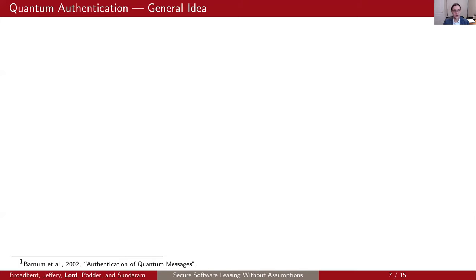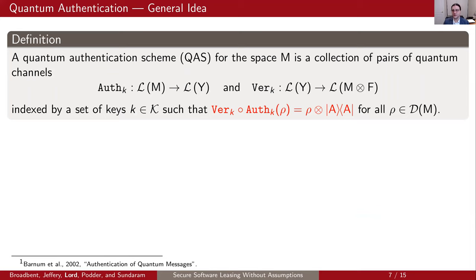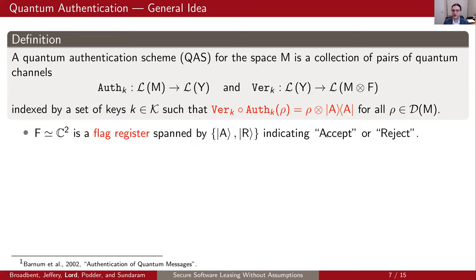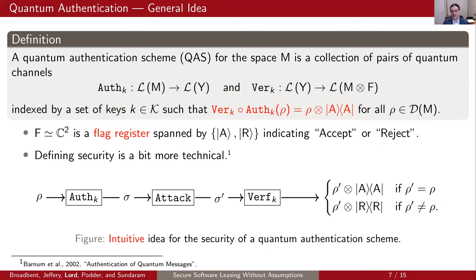We achieve honest malicious copy protection using quantum authentication. At the level of syntax, a quantum authentication scheme for some space M is a collection of pairs of quantum channels, authenticate and verify, indexed by keys k. They satisfy a correctness guarantee: if you verify an authenticated state using the correct key, you get precisely that state back, along with a flag qubit in the A register, which is spanned by either the accept or reject state. Security is more technical to define, but intuitively, if some attack interacts with the state between authentication and verification, you want to ensure you never output the reject flag without obtaining the initial state back — though this is not a formal definition.